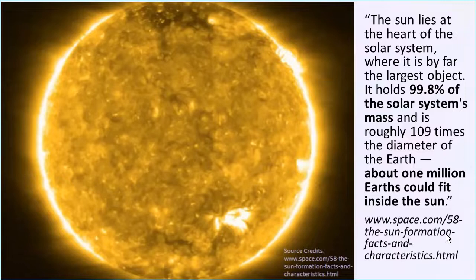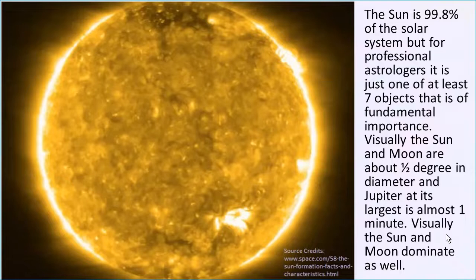So even Jupiter, Saturn, the so-called giant planets are tiny, almost negligible. Think about 99.8% — it's almost a hundred percent. The planets are so tiny compared to the Sun. Just how big the Sun is in relationship to all the planets, all the minor planets and asteroids, etc. You could fit about one million Earths inside the Sun. This is from the website space.com, a reliable source of astronomical information.